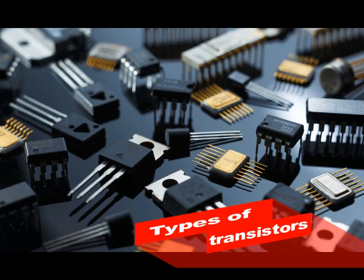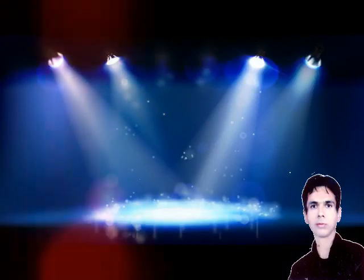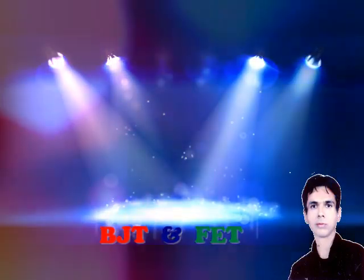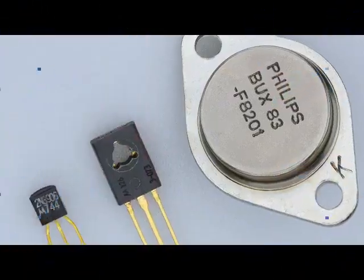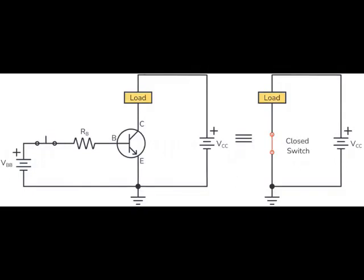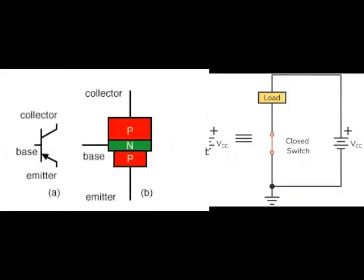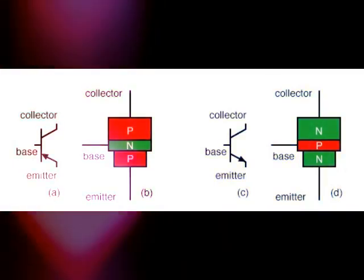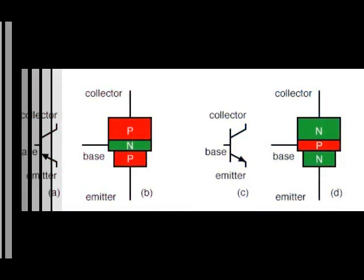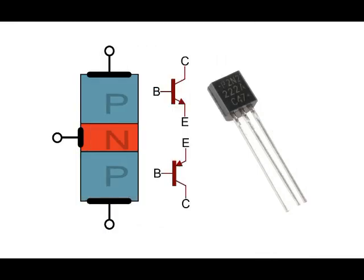Types of transistors: transistors are generally divided into two categories — the bipolar junction transistor (BJT) and the field effect transistor (FET). Bipolar junction transistors are turned on by an input current applied to the base. BJTs have low input impedance.